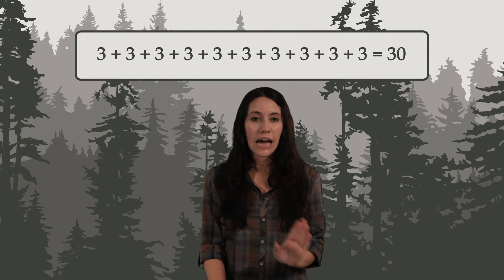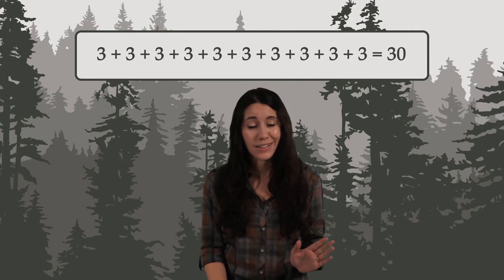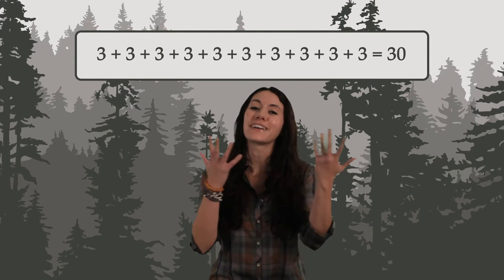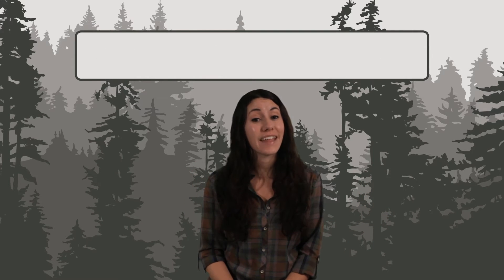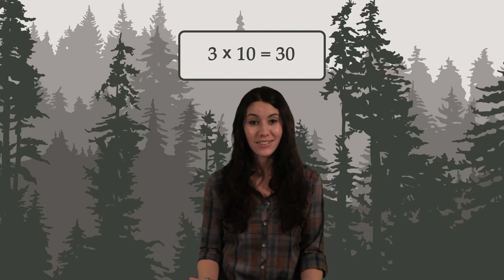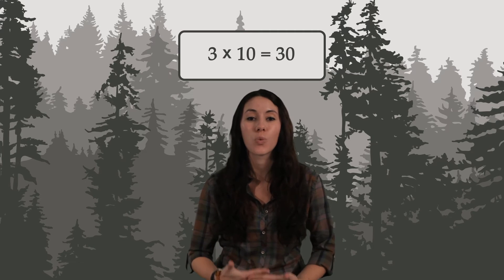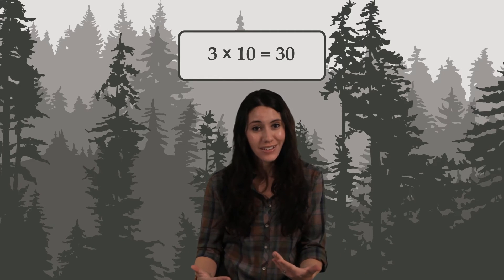Okay, there has got to be an easier way to write that down. And luckily there is: multiplication. We're adding a total of 10 threes, so we can write it as 3 times 10. Multiplication is a faster way to write repeated addition.